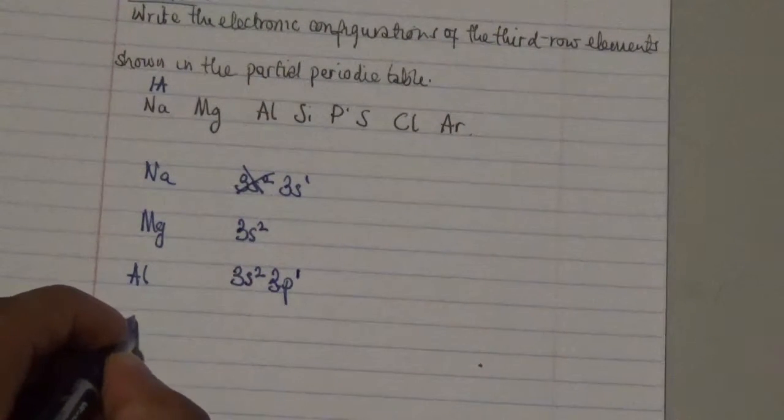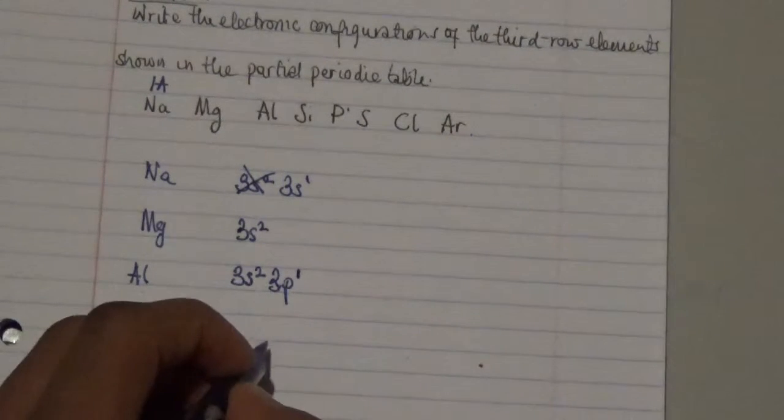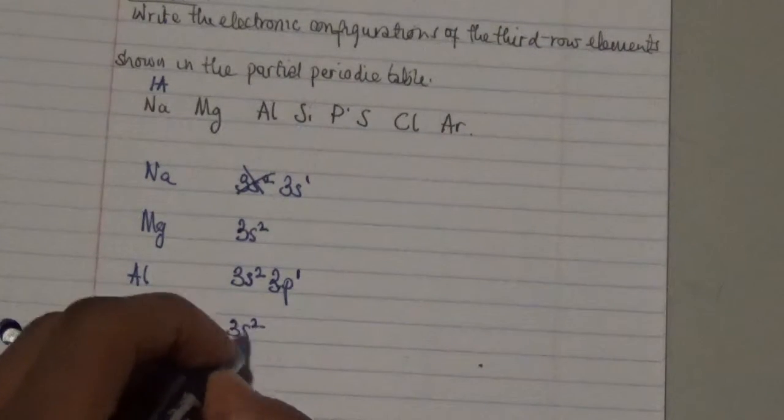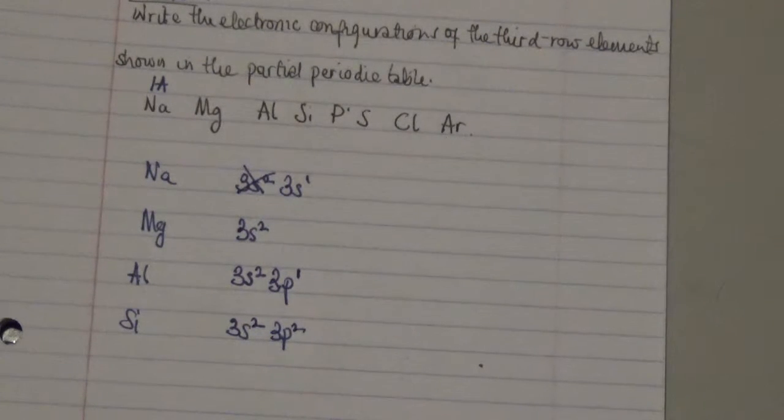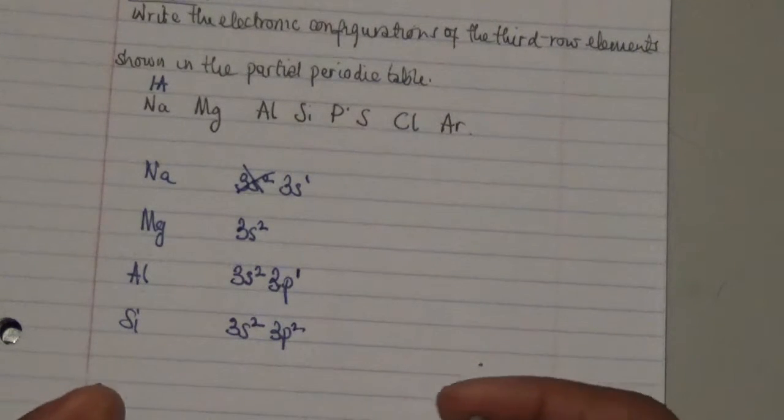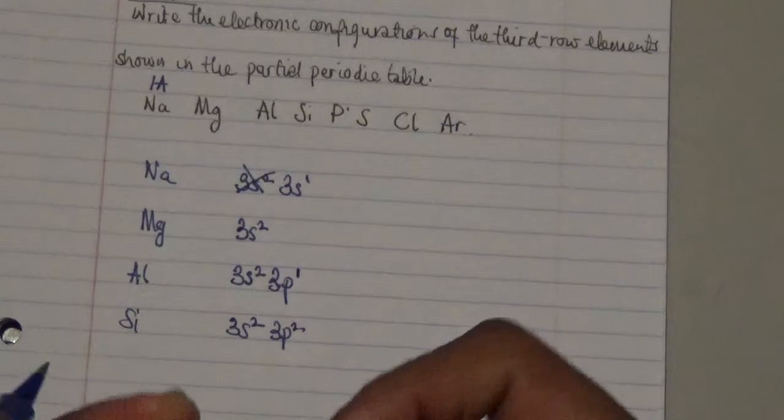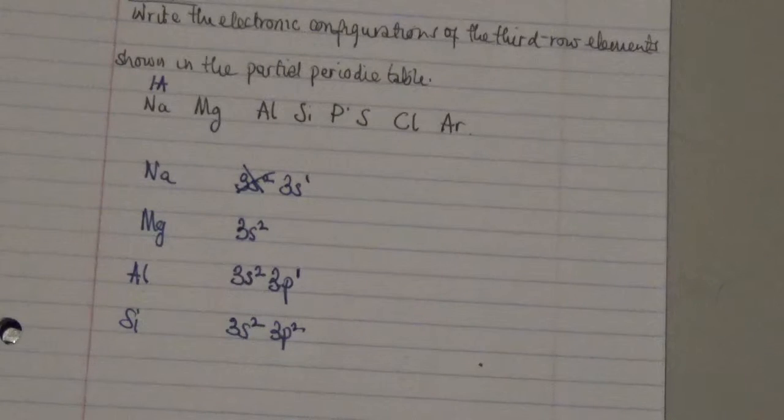In the other case here we have silicon, an interesting element. We have 3s2, 3p2. Pretty much has the same properties as carbon, but this guy is pretty interesting because you use them mostly in separation of various organic compounds or mostly polar compounds involved or present in an inorganic or organic compound.